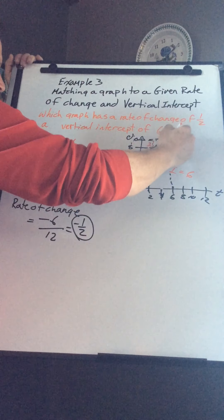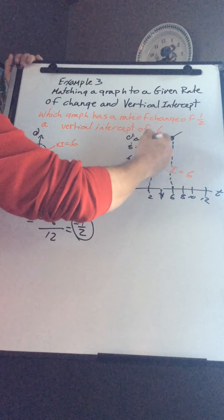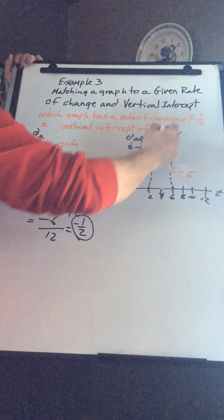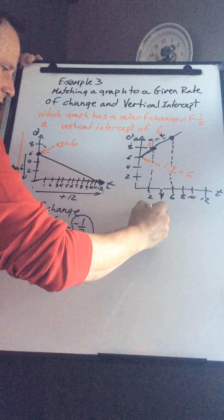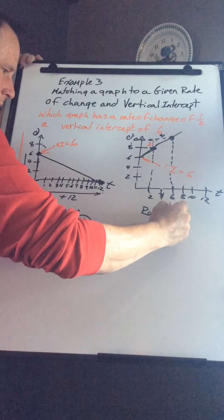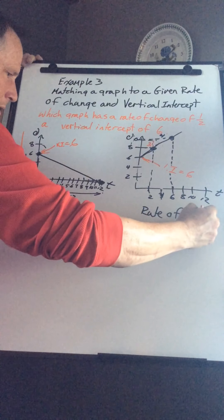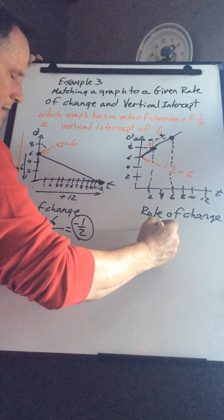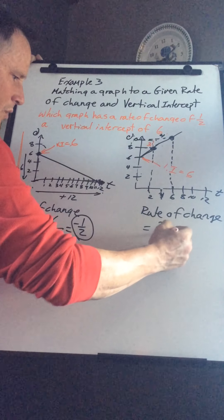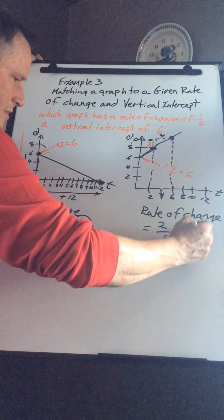Here it is here. I go up two from eight to ten. And I go over four from two to six. So in this case, the rate of change is going to be up two over four, which is one-half.